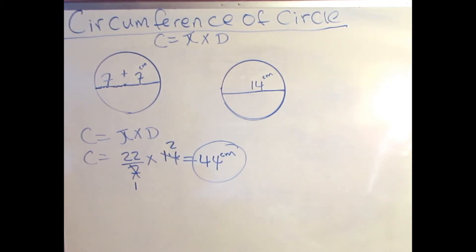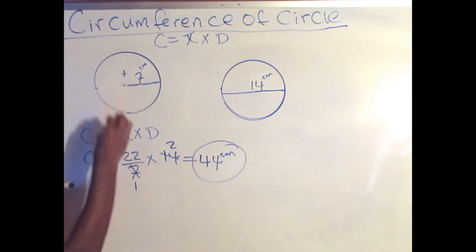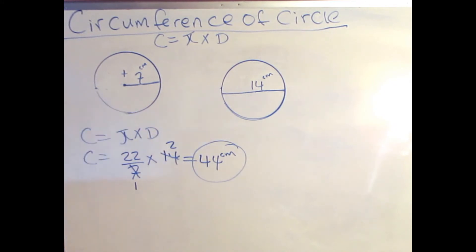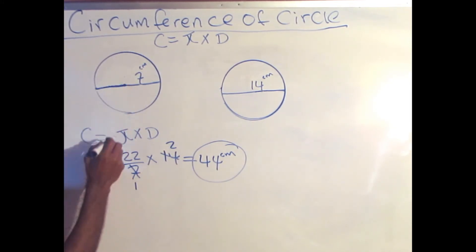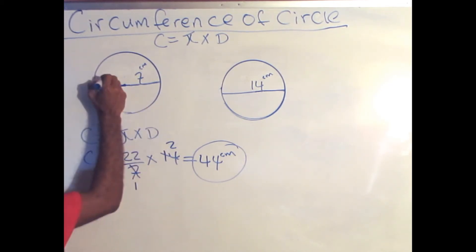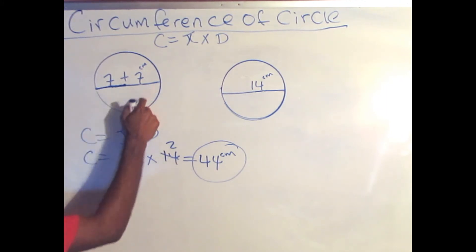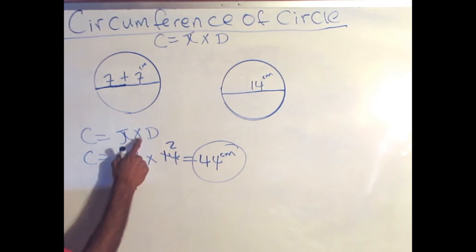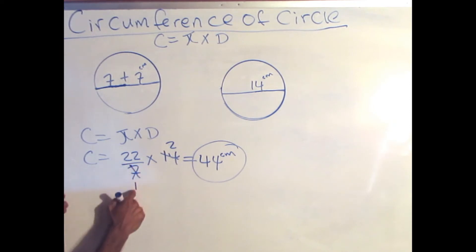How did I arrive at 44 centimeters? When I got the problem, they didn't give me the full diameter — they gave me a quarter of the circle, which is the radius. To get the diameter, I need to add another quarter, giving me the full diameter. Since this quarter is 7, the other has to be 7. After converting to the diameter, I use 22 over 7 times 14. Cancel: 7 into 7 is 1, 7 into 14 is 2, and 22 times 2 is 44 centimeters.